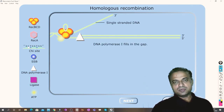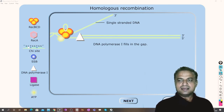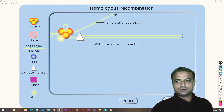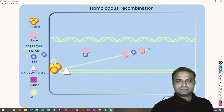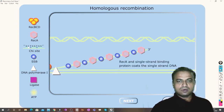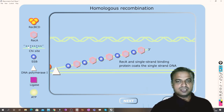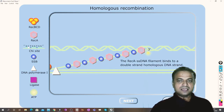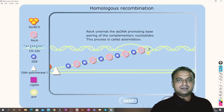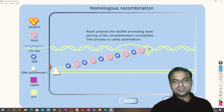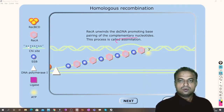Once strand separation is complete, DNA polymerase comes into action and fills the gap. Now there are three strands. Single-stranded binding proteins like RecA bind and protect the single-stranded DNA left undegraded by RecBCD. The incoming DNA then forms homology — it gets attached to this strand — and RecA unwinds the double-stranded DNA, promoting base pairing of complementary nucleotides. This process is known as assimilation.